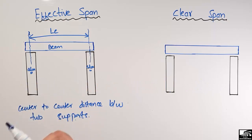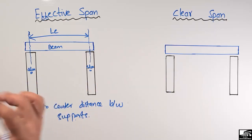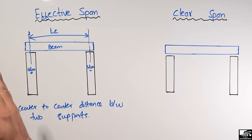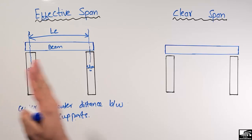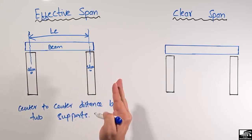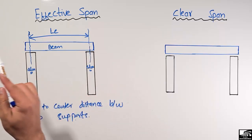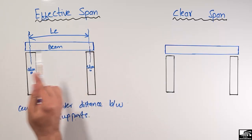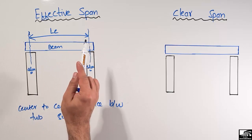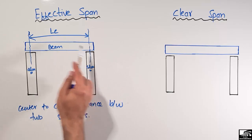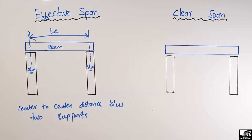It is very simple — we just have to consider the center of one support and the center of another support, and the distance between these two centers is known as the effective span or effective length of the beam.